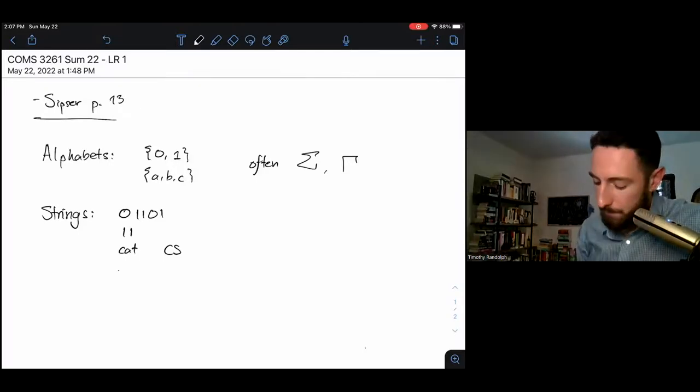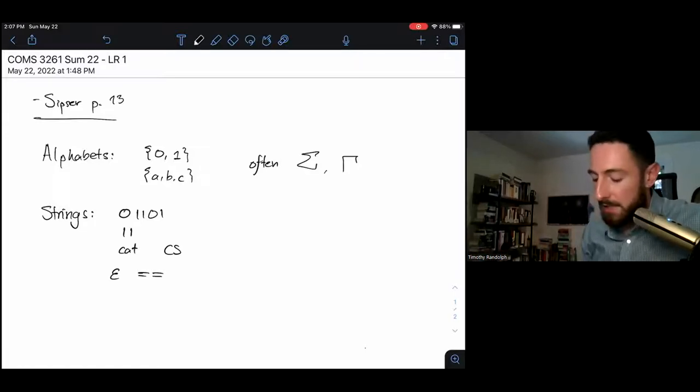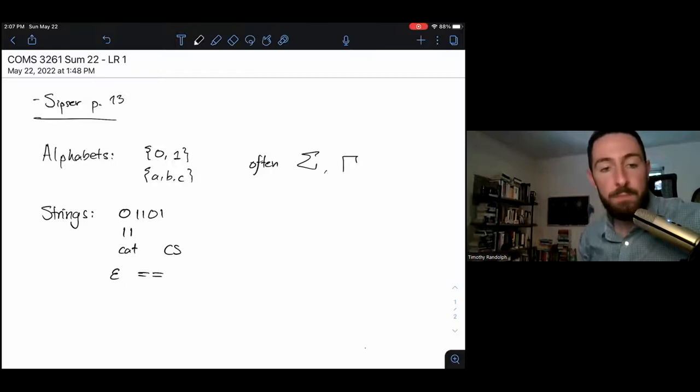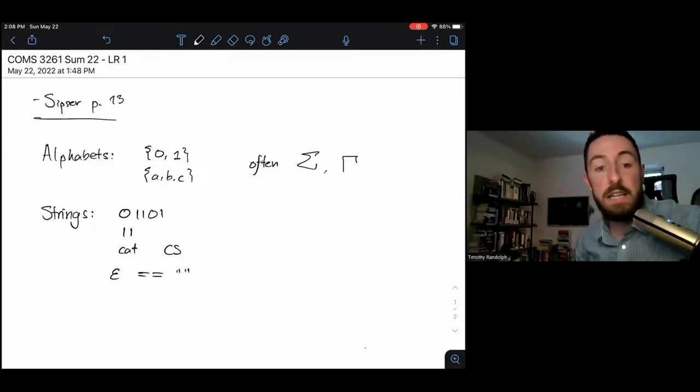We've got a special symbol that is epsilon, and epsilon is not an alphabet character. It's just a symbol that represents the empty string. In Java or Python, you might write the empty string with two quotes. It's the string with no letters in it, and it's a string in every alphabet.